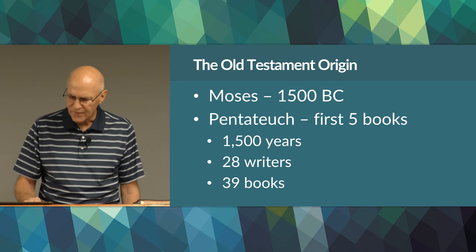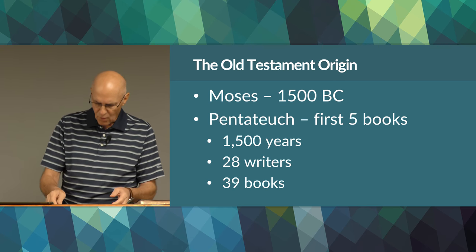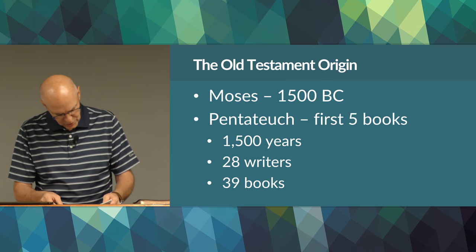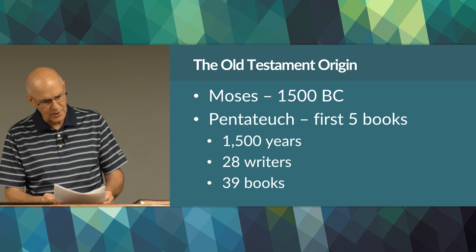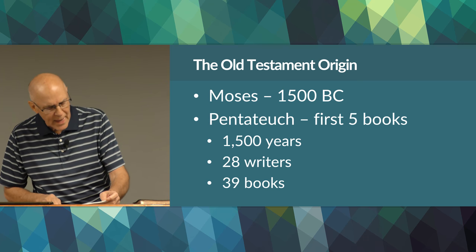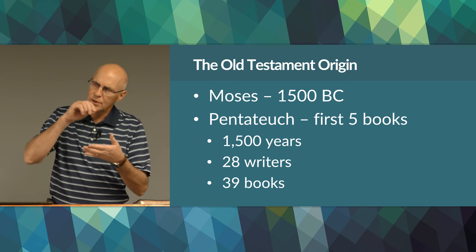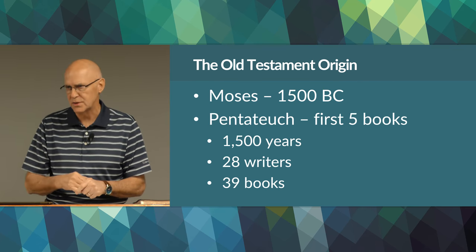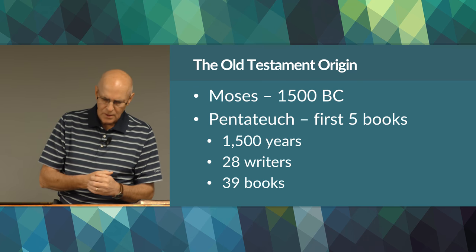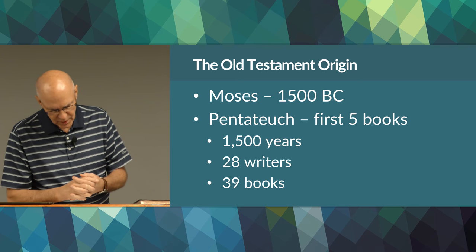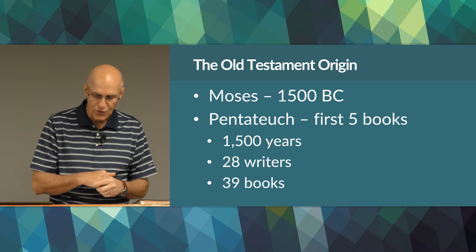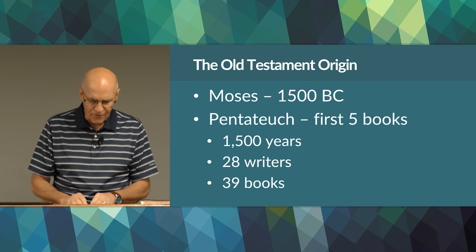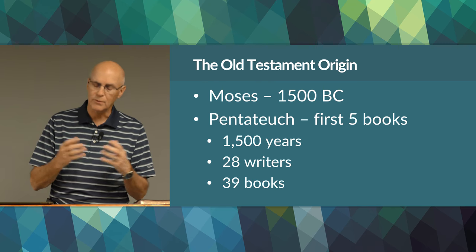The Old Testament was written in the Hebrew language, still used today in Israel. The first man charged with recording events and communication from God was Moses, around 1500 BC. Exodus 24 records the words of the covenant at Sinai; Exodus 34, the Ten Commandments. Moses is credited with writing and organizing the first five books of the Bible, called the Pentateuch. Jesus confirms this in Matthew chapter 4, verse 4.